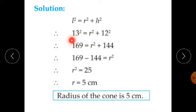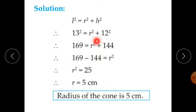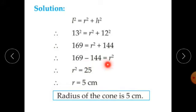The slant height is given as 13, so 13 squared equals R squared plus 12 squared. That gives us 169 equals R squared plus 144, so 169 minus 144 equals R squared.